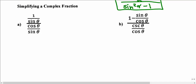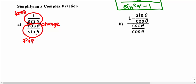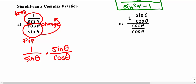To simplify a complex fraction where one fraction is divided by another, we keep the first fraction, change division to multiplication, and flip the second fraction — keep, change, flip. For example, 1 over sine theta divided by cosine theta over sine theta becomes 1 over sine theta times sine theta over cosine theta. The sine thetas cancel, leaving 1 over cosine theta.